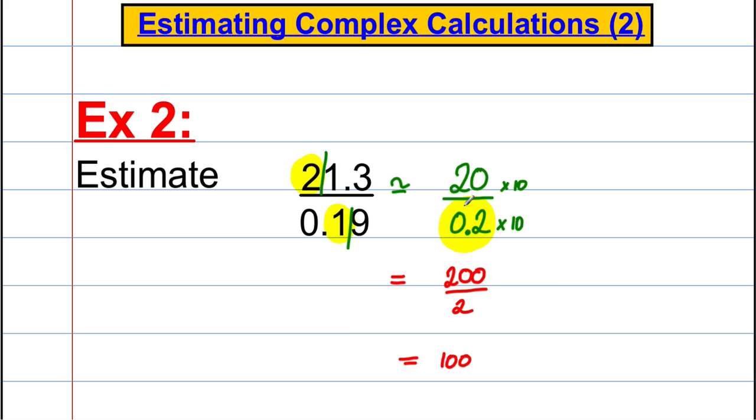So a key idea there: we didn't like 0.2 on the denominator, so we multiplied the denominator by 10. And so as not to change the answer, we multiply the numerator by 10 as well to make ourselves a much easier calculation which would have the same value.